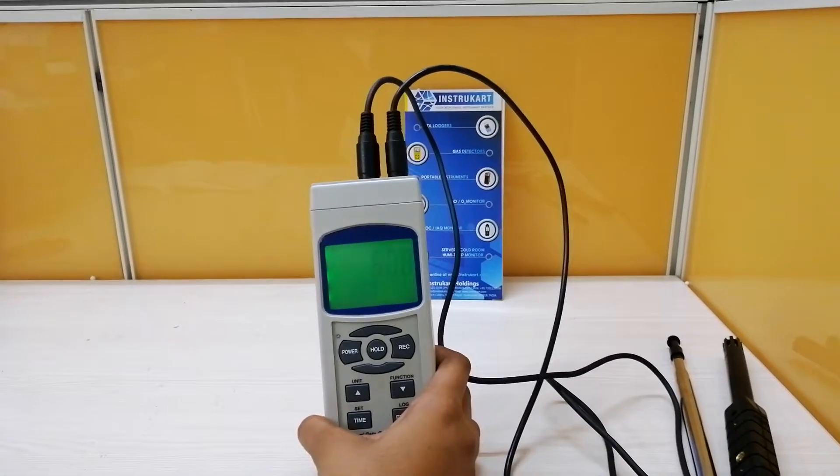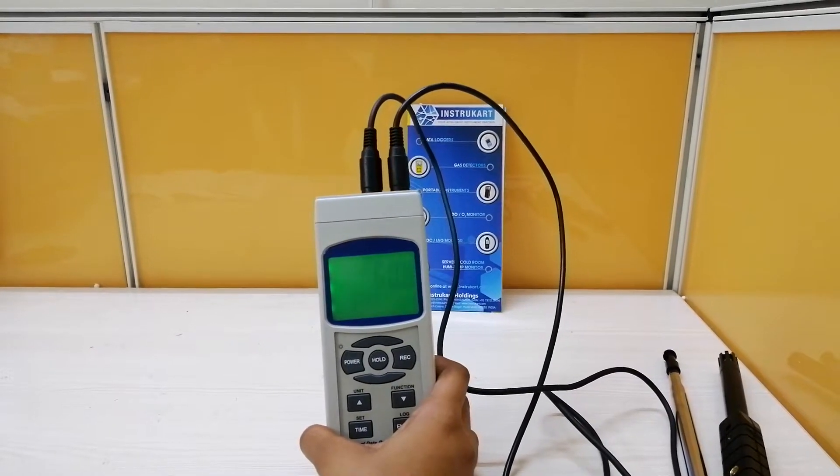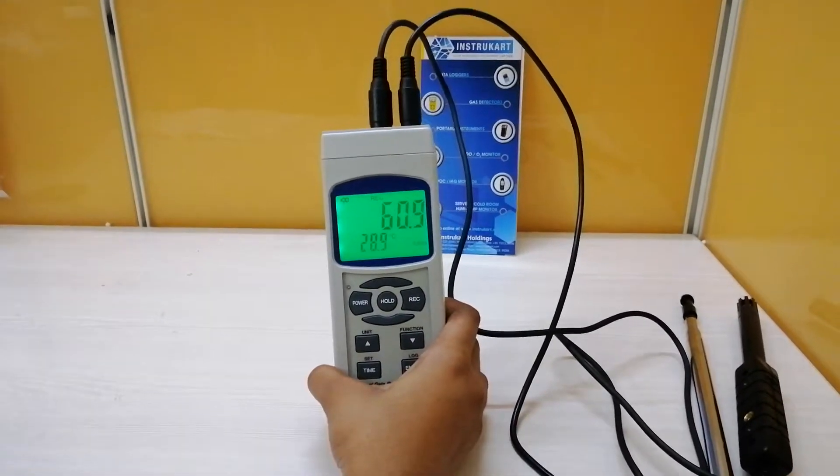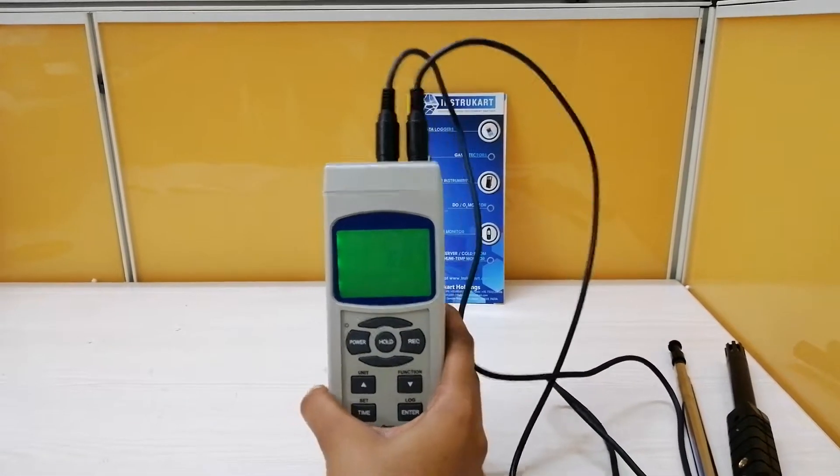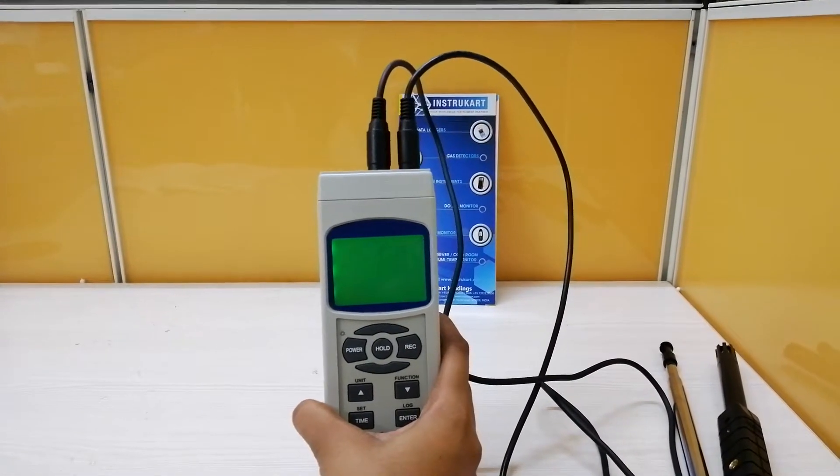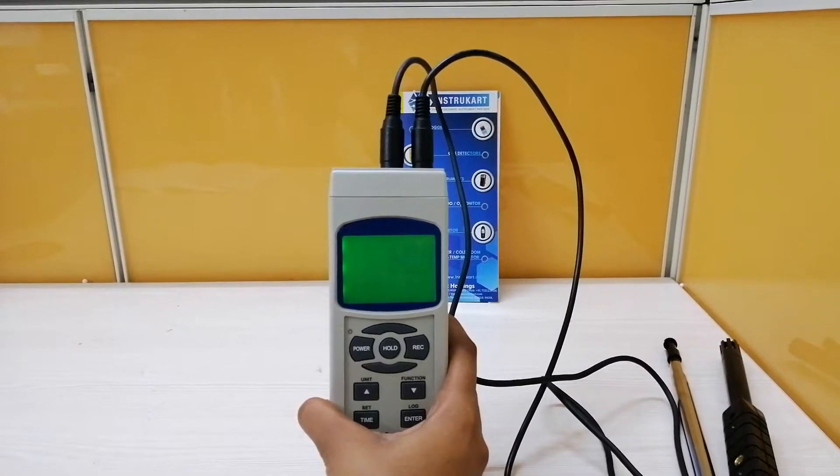This anemometer can measure the parameters like air velocity, air flow, air temperature, humidity, ambient temperature, dew point temperature, wet bulb temperature, and it has fast humidity measuring response time. It also has real-time SD card memory data logging.